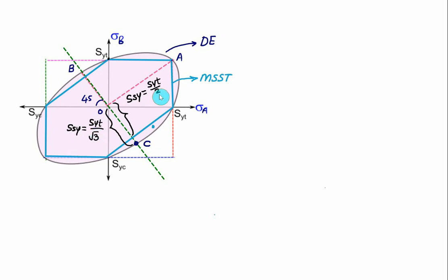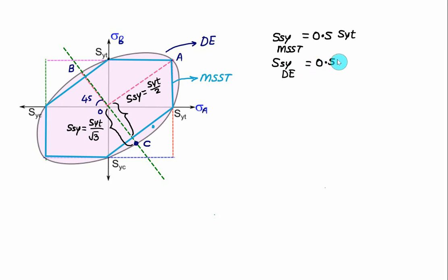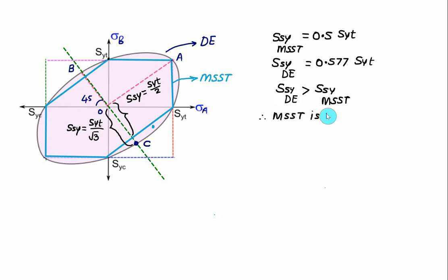Numerically, 1/√3 = 0.577 and 1/2 = 0.5, so the torsional shear strength by MSST is 0.5·Syt and by distortion energy theory is 0.577·Syt. Since MSST gives a lower torsional shear strength, it is more conservative. Both theories apply to ductile materials, but in practice, distortion energy theory is preferred.